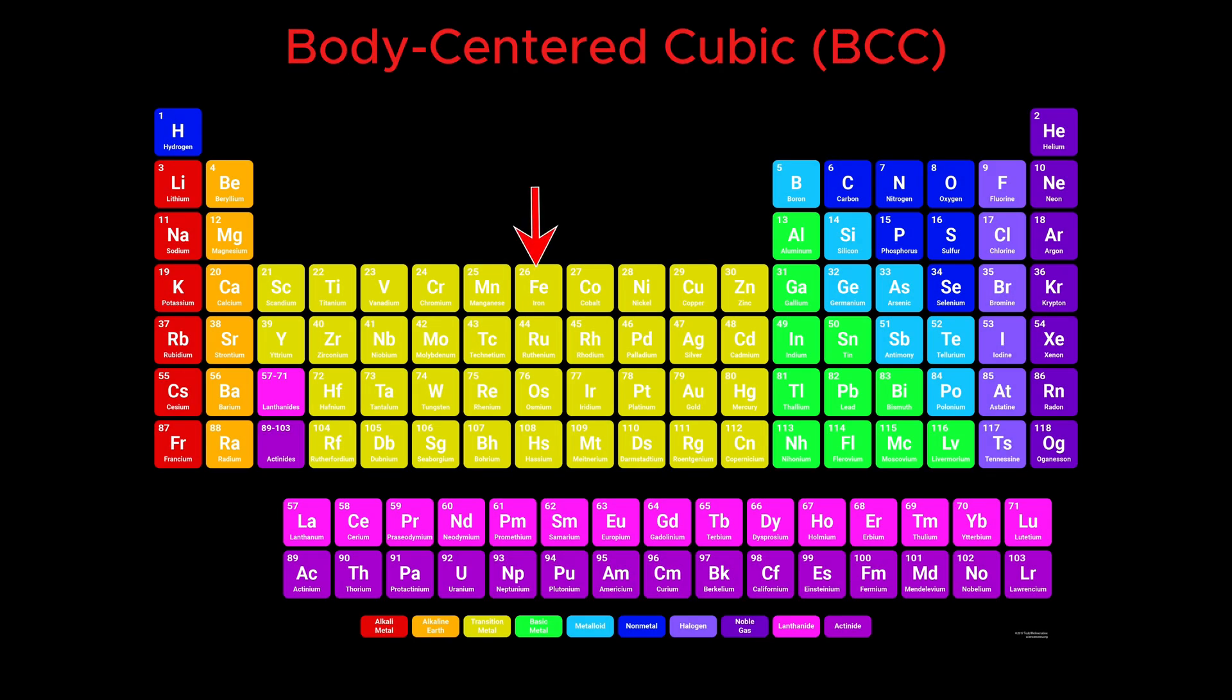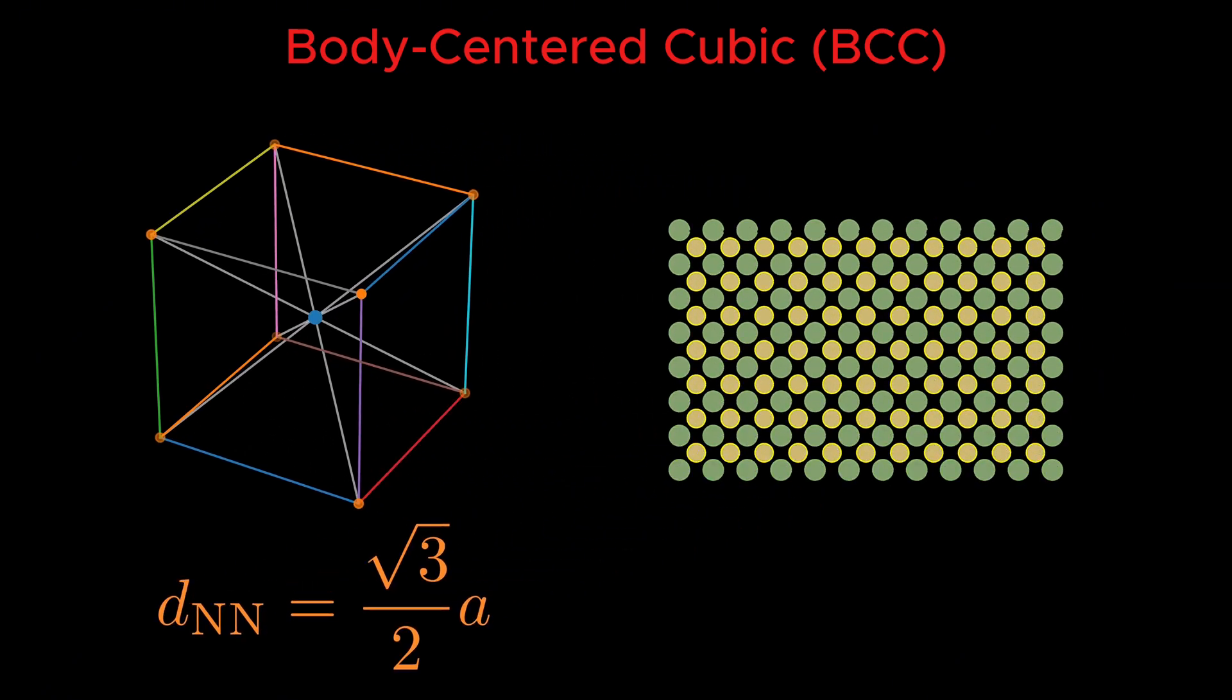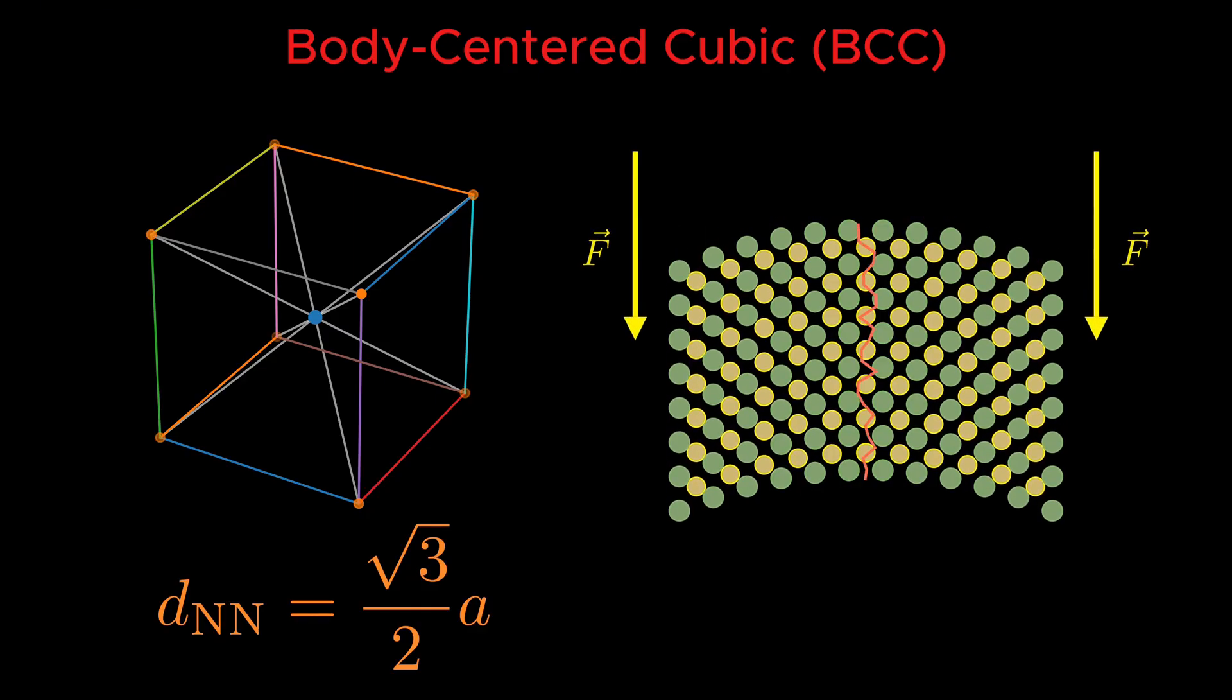Materials like iron at room temperature and steel belong to a different class called body-centered cubic, or BCC. Here, atoms are located at the eight corners of the cube and one atom sits at the very center. The body-centered atom touches all eight corner atoms. Nearest neighbors lie along the body-diagonal, which is represented by this equation. Each atom has eight nearest neighbors, fewer than FCC, so BCC is less densely packed. Metals with this structure are strong and hard, but less ductile.